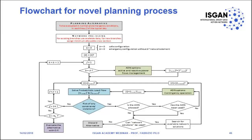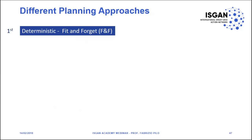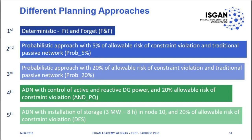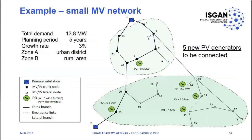Adding multi-objective, probabilistic, and smart grid operational elements to planning makes the simple traditional flowchart significantly more complex. We do need methods and techniques to manage this new planning complexity. As a final example, we compare five different planning studies on the same small network: deterministic fit-and-forget; a simple probabilistic approach with different levels of allowable risk; active management of the system; and finally storage installed in the system. The problem involves connecting five new PV generators and seeing what network investments are needed.